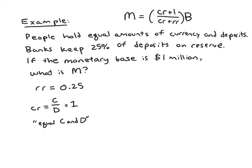So now we have everything we need to plug in. We have CR, RR, and B. Let's do it. M equals CR plus 1, so that would be 1 plus 1 over CR plus RR, so 1 plus 0.25 times the monetary base, B. We'll plug in for that later. So you get 1.6 times B. And B, we're told, is a million. So 1.6 times a million is $1.6 million. So our money supply is $1.6 million. We've solved the problem. That's all that was asked for.